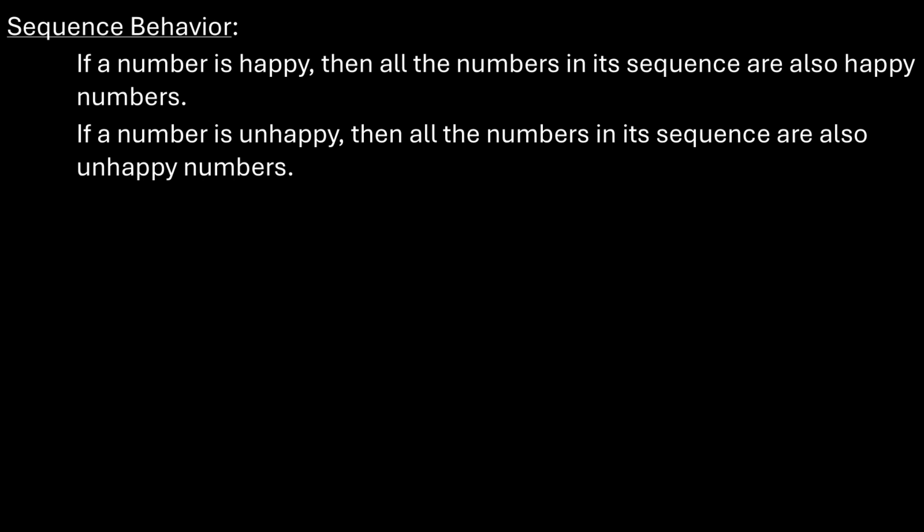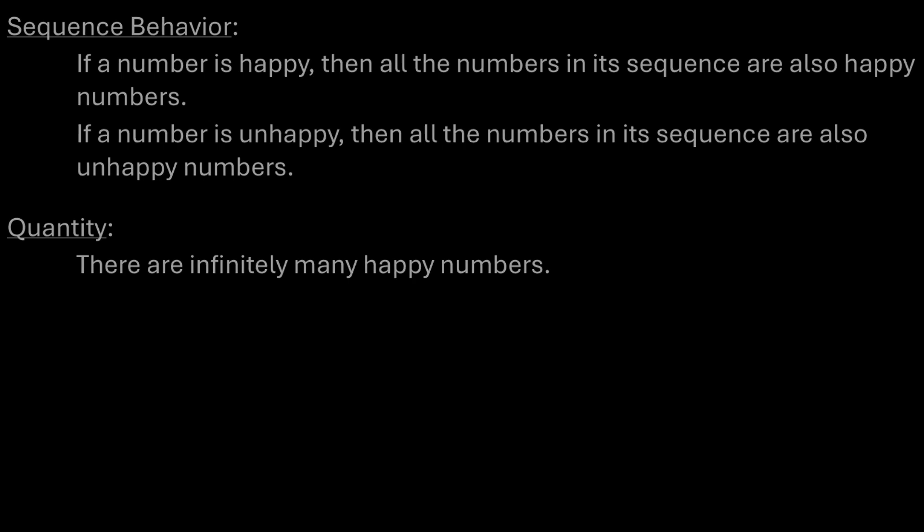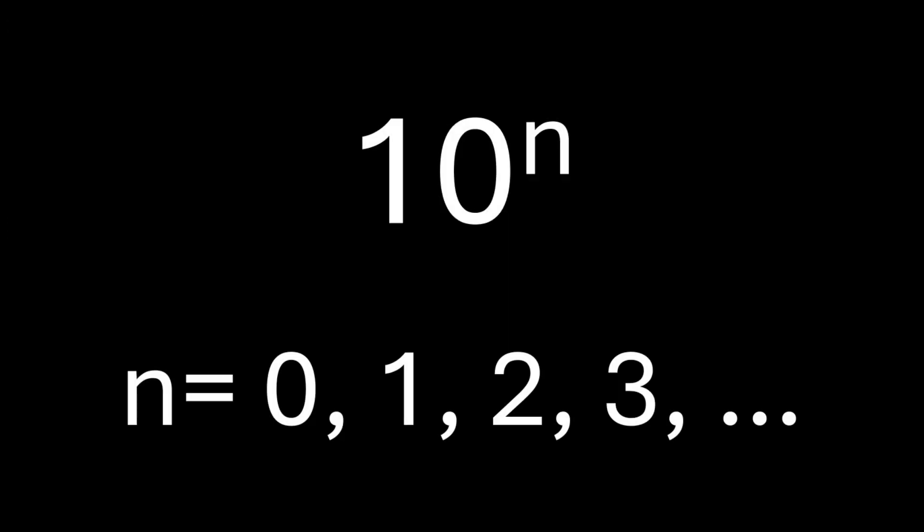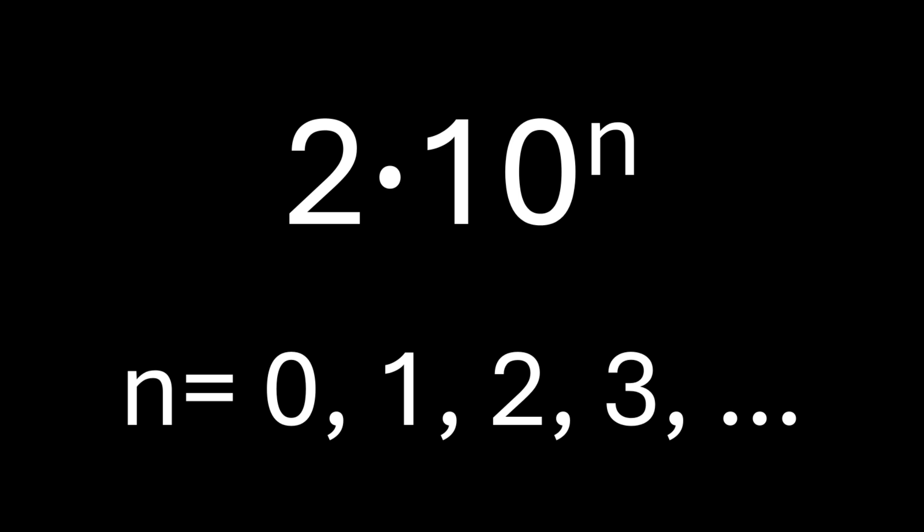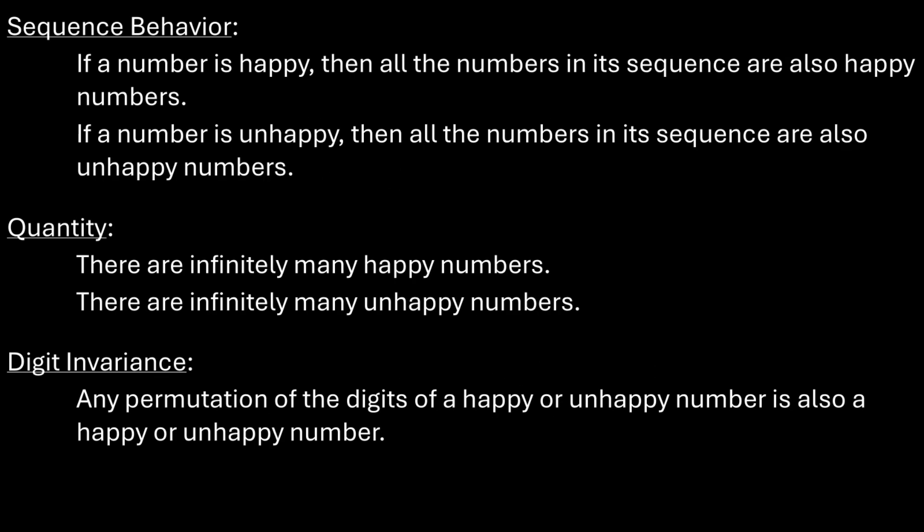There are infinitely many happy numbers. To see this, consider 10 to the nth power where n is natural. These are always happy numbers since summing the squares of the digits always gives one. There are also infinitely many unhappy numbers because 2 times 10 to the nth power is always unhappy.